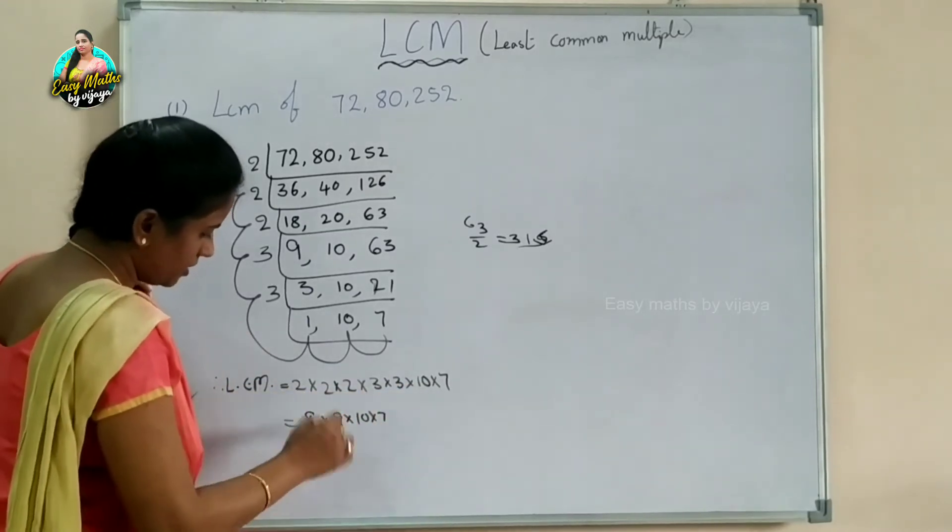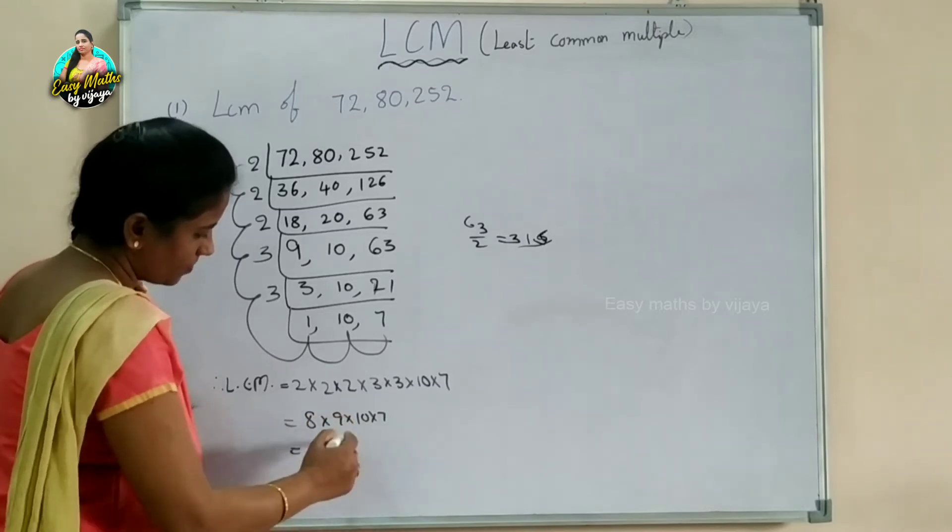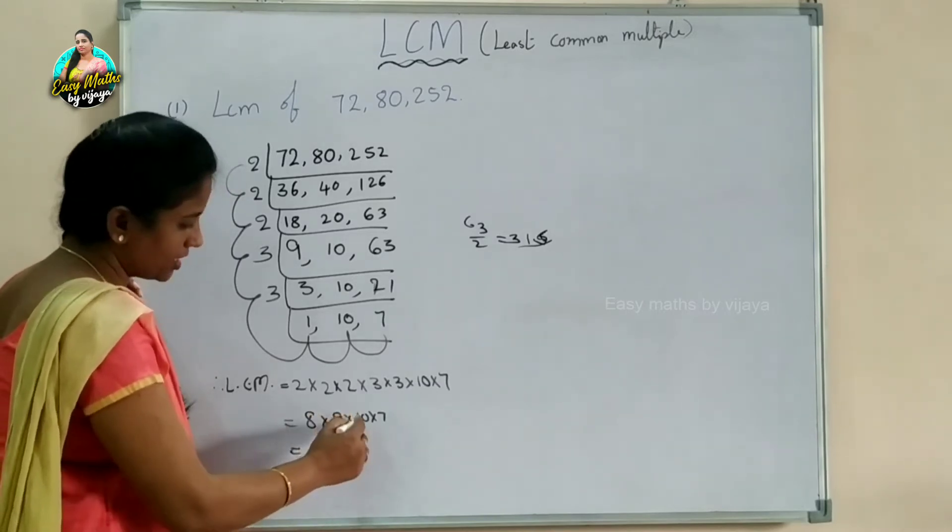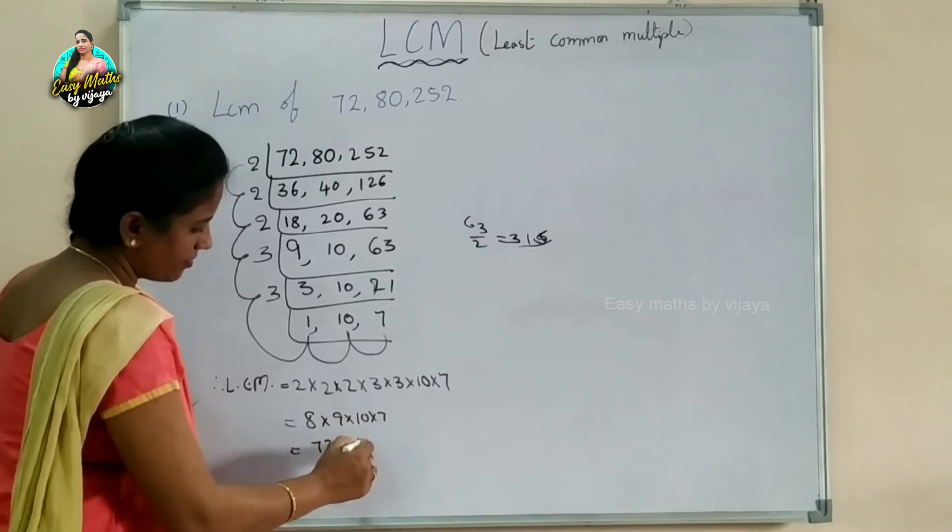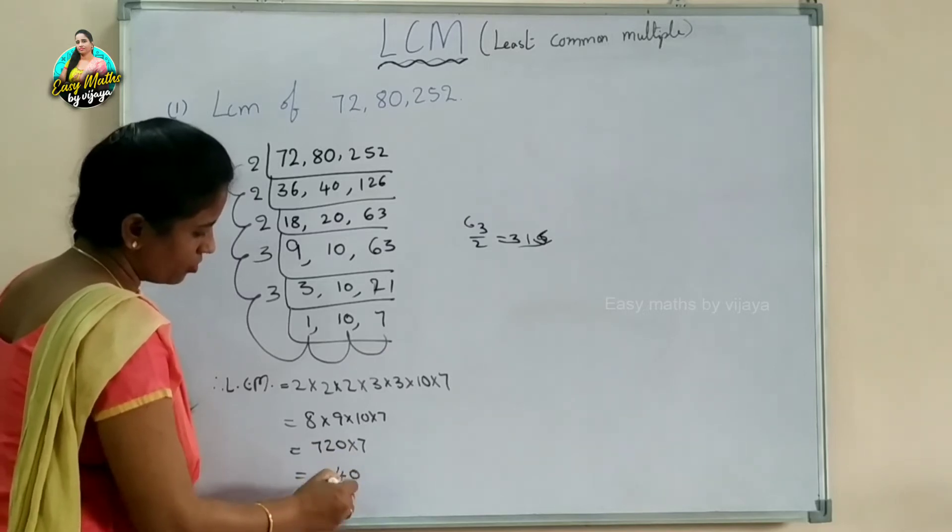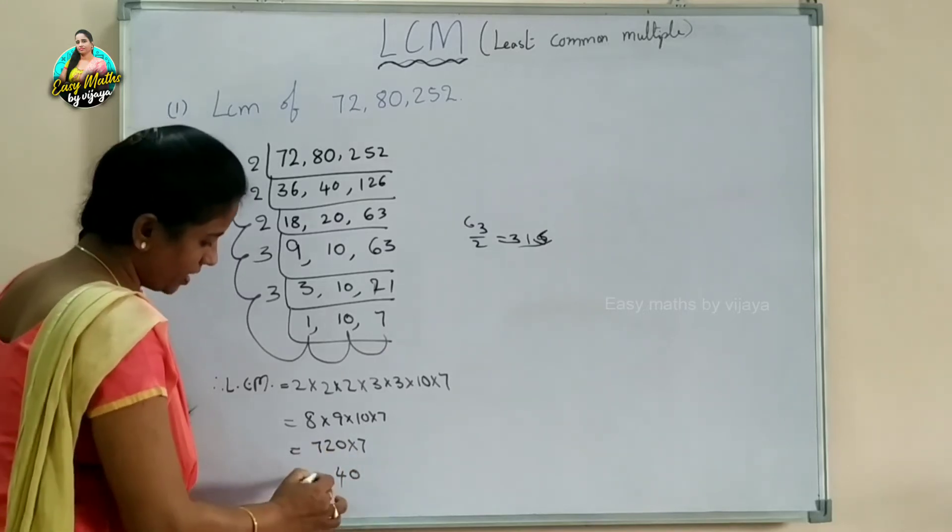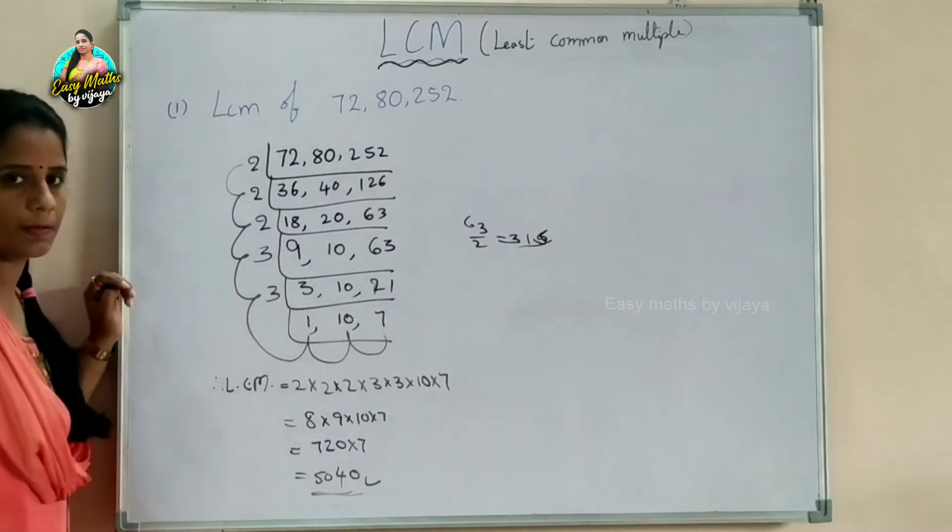Now let's multiply all the divisors: 2 times 2 times 2 equals 8, times 3 times 3 equals 72, times 10 equals 720, times 7 equals 5040. So 5040 is the answer.